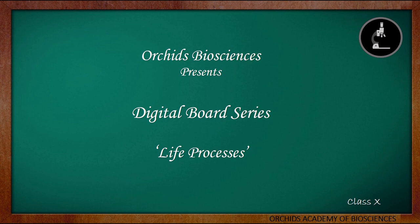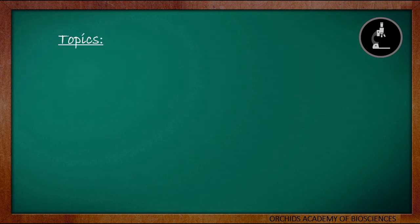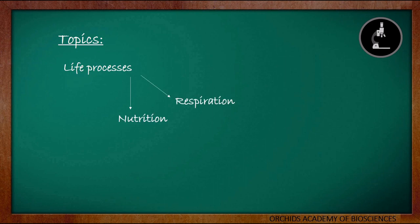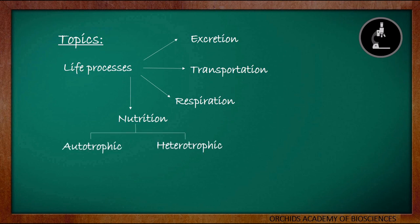Now, let's get started with the first chapter of this series, Life Processes. In this video, we will be discussing an introduction to life processes and then we will come to the four major life processes in the chapter: nutrition, respiration, transportation and excretion. Then, under nutrition, we will be discussing autotrophic and heterotrophic nutrition. And finally, under the autotrophic mode of nutrition, we will be discussing the concept of photosynthesis in detail.